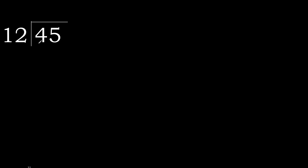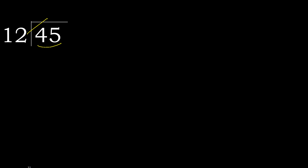45 divided by 12. 4 is less, therefore next. 45 is not less, therefore with 45. 12 — multiply by which number is nearest to 45 but not greater.